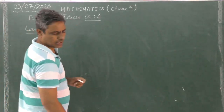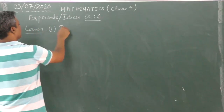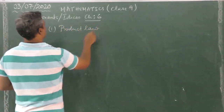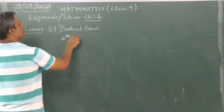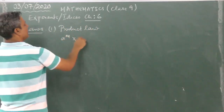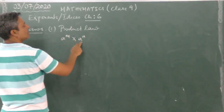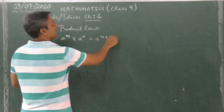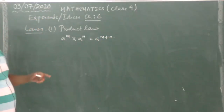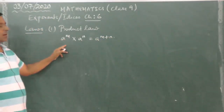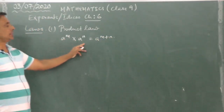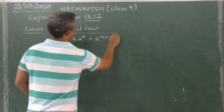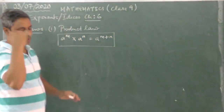The first law we are going to look at is the Product Law, which says a to the power of m into a to the power of n is equal to a to the power of m plus n.